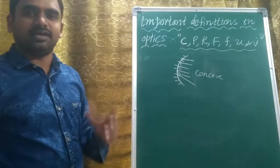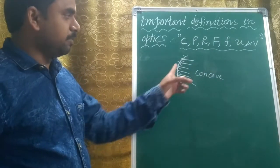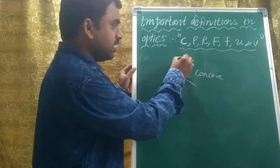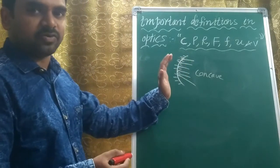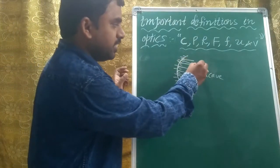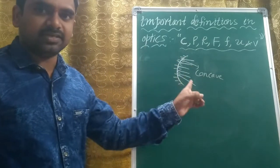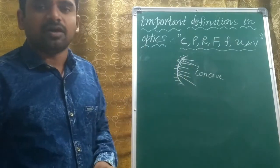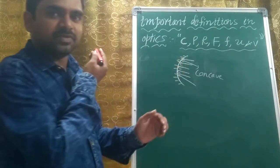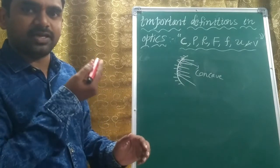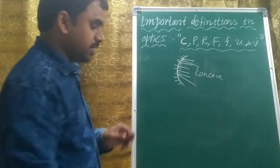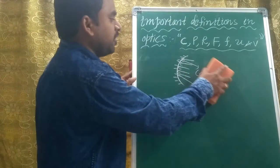The silver-coated area on the inside is what reflects the light, and that is called a concave mirror. If the bulging surface is the reflecting area, then that is called a convex mirror.